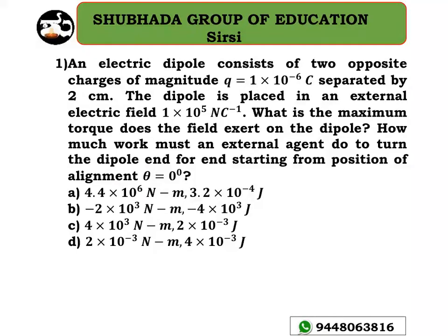An electric dipole consists of two opposite charges of magnitude Q equal to 1 into 10 to the power of minus 6 Coulomb, separated by a distance of 2 cm. The dipole is placed in an external electric field of 1 into 10 to the power of 5 Newton per Coulomb. What is the maximum torque the field exerts on the dipole?